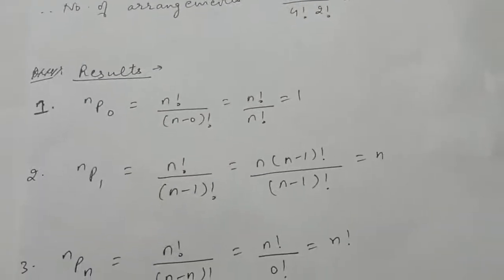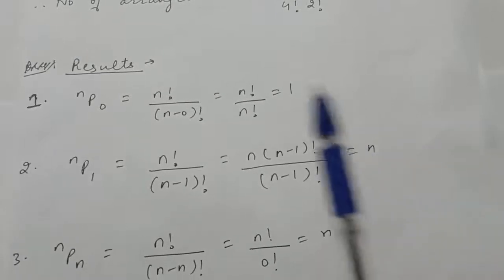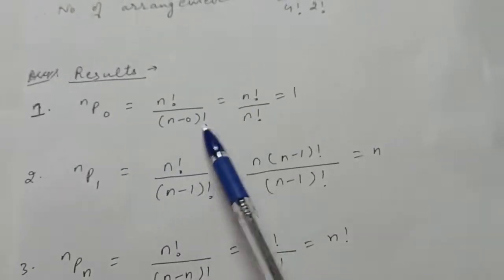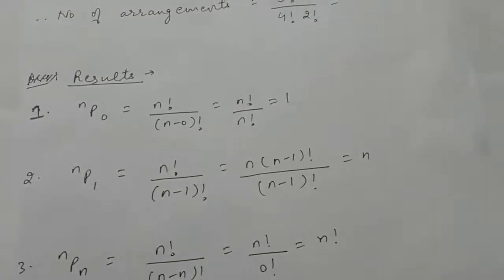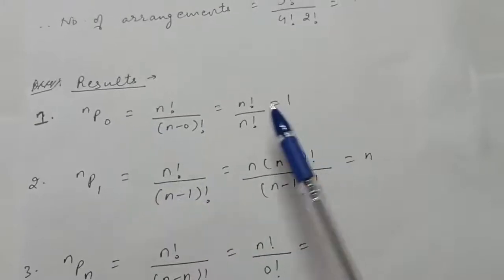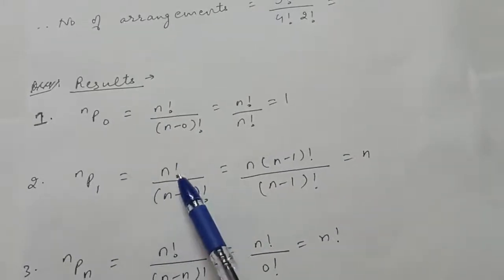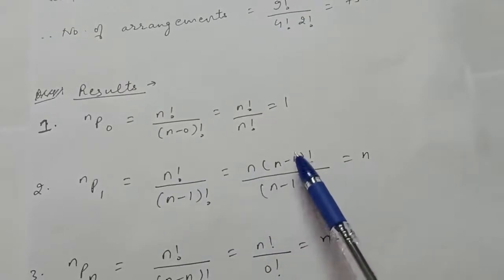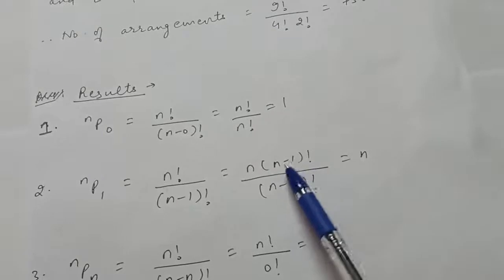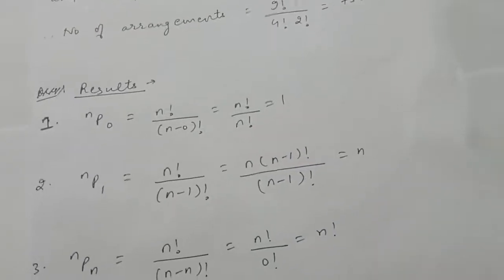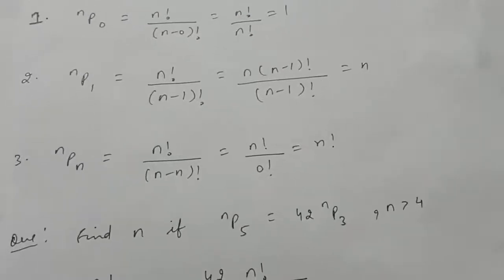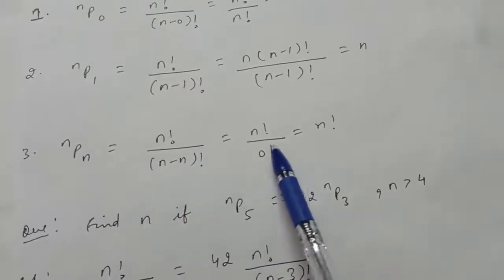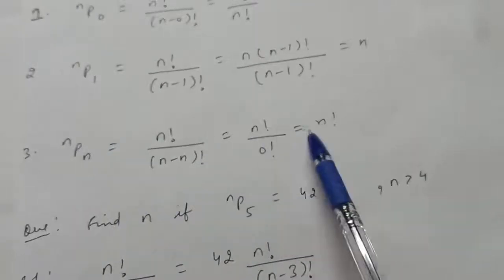Some special results: nP0 = n! / n! = 1. For nP1 = n! / (n−1)! = n×(n−1)! / (n−1)! = n. And nPn = n! / (n−n)! = n! / 0! = n!, since 0! = 1.